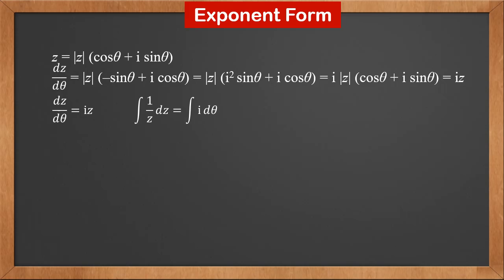Now let's resolve the differential equation dz over d theta equals iz. Separating the variables, we get the integral of 1 over z dz equals the integral of i d theta. This gives ln z equals i theta plus c. So z is e to the power of i theta plus c, which is e to i theta times e to c.